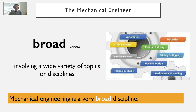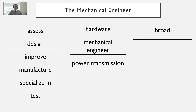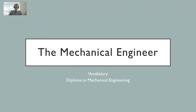And the last word: broad. This one is an adjective. It means involving a wide variety of topics or disciplines. For example, mechanical engineering is a very broad discipline — you have robotics, petroleum and gas, aviation, automotive. There are many different areas of topics. So these are the words for the mechanical engineer.